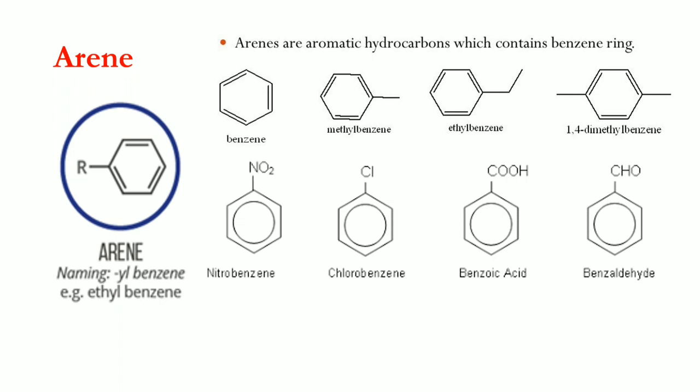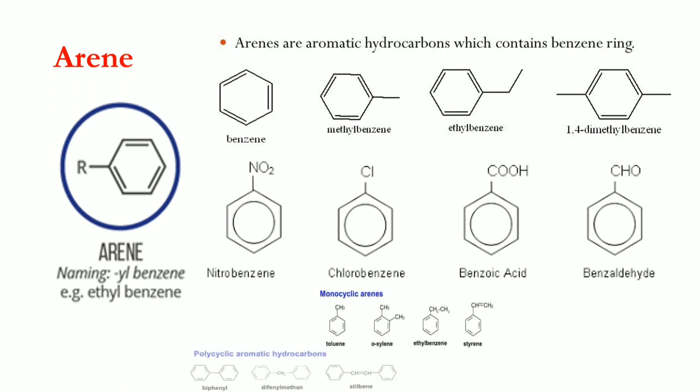When one hydrogen is replaced with a carboxyl group (-COOH), the compound is benzoic acid. If one hydrogen is replaced with a carbonyl group, it becomes an aldehyde called benzaldehyde. Arenes are categorized as monocyclic, polycyclic, and linear fusion, which are more complex topics to be covered in higher chemistry.